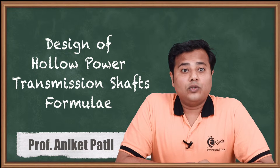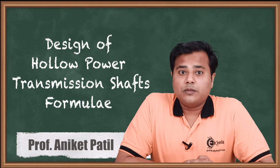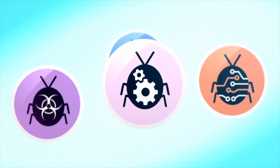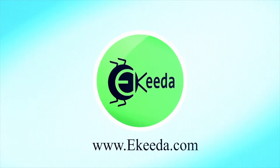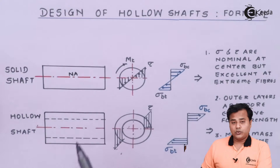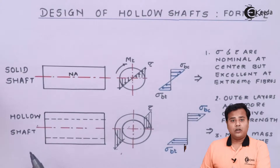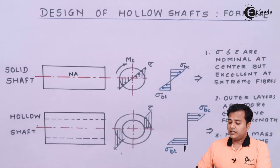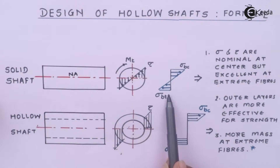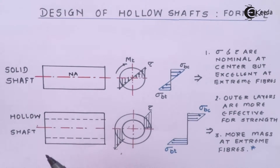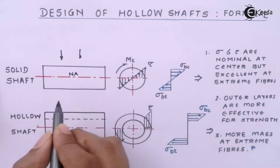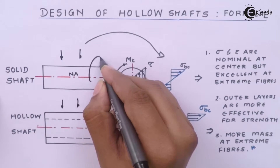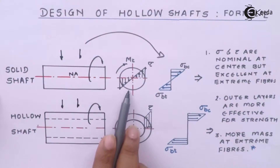There is a slight difference between a hollow shaft and a solid shaft that we need to understand properly. On screen you can see two shafts — one solid and one hollow. The hollow shaft has a hole inside it. There are two stress distributions to consider: torsional shear stress and bending stress. Transverse loads lead to bending stresses, and torque acting about the axis leads to shear stress.